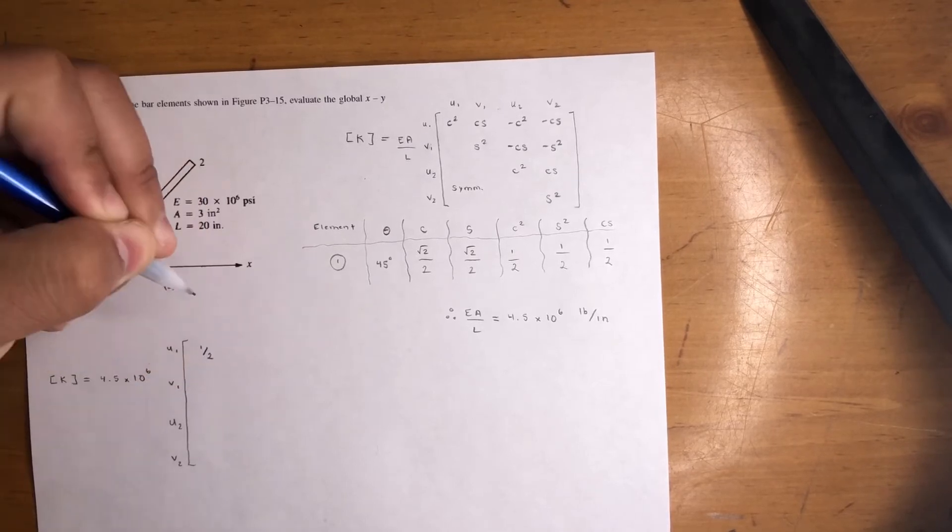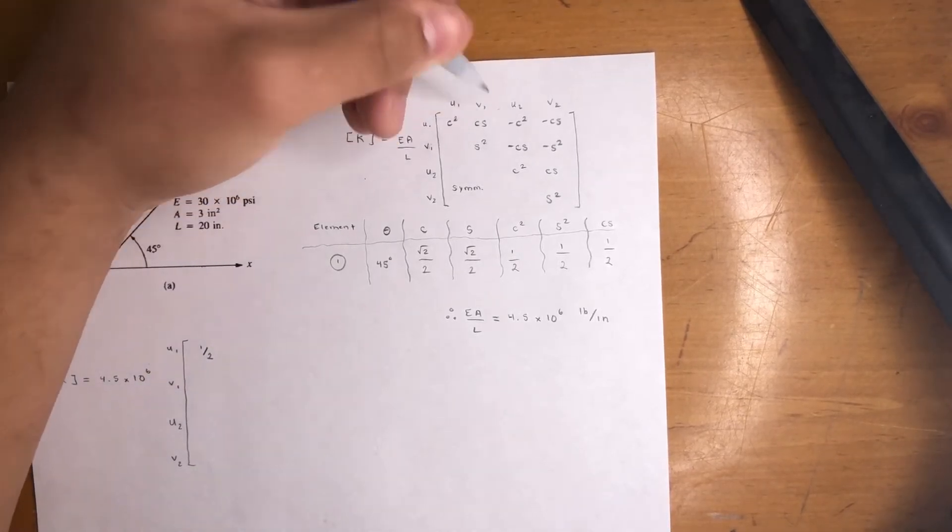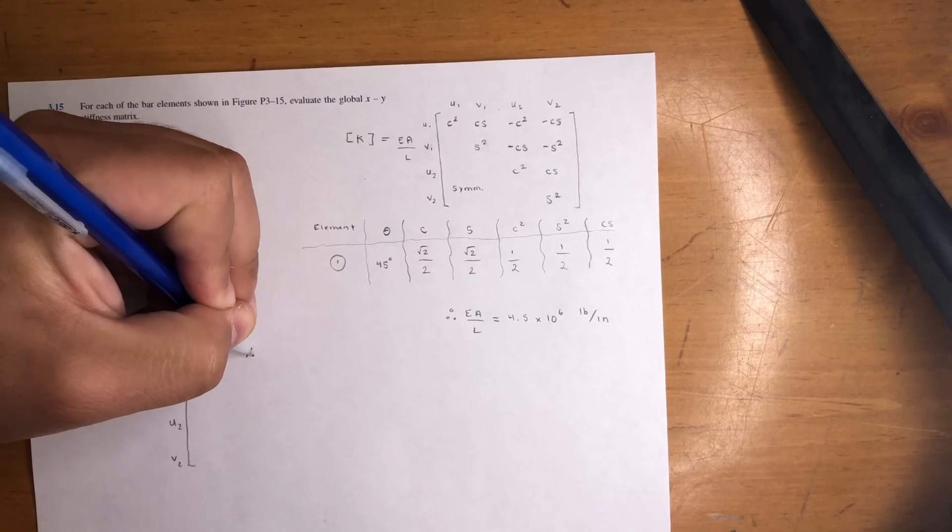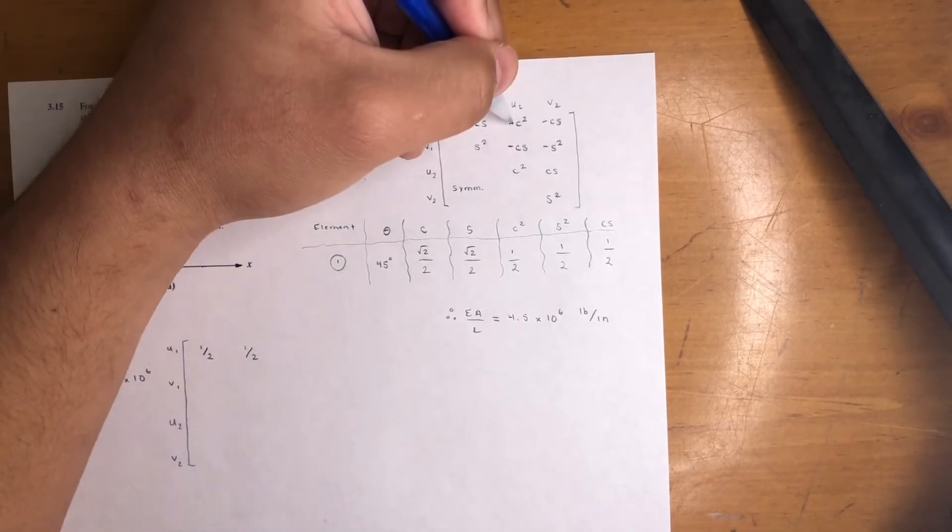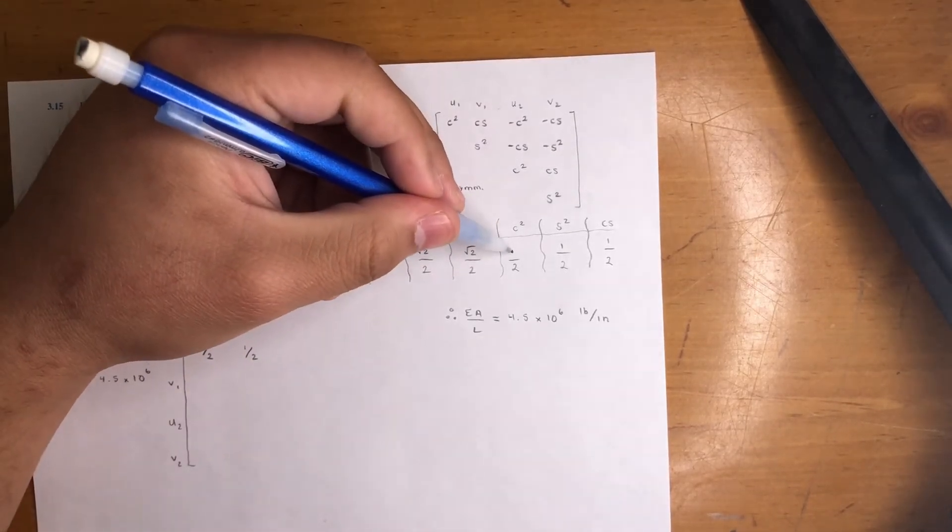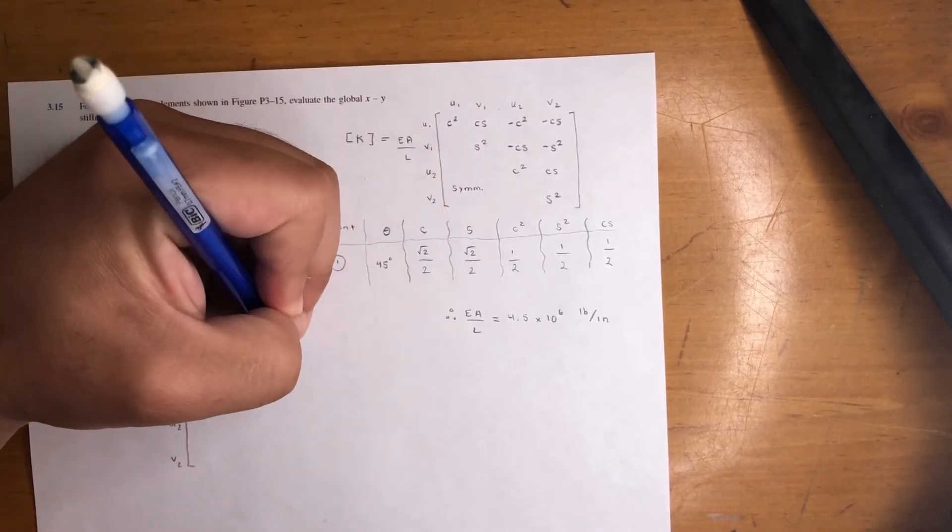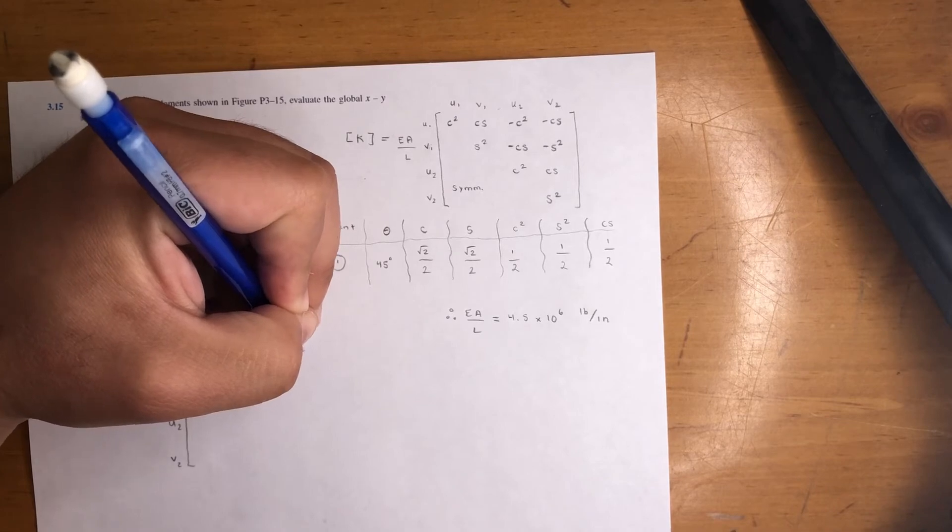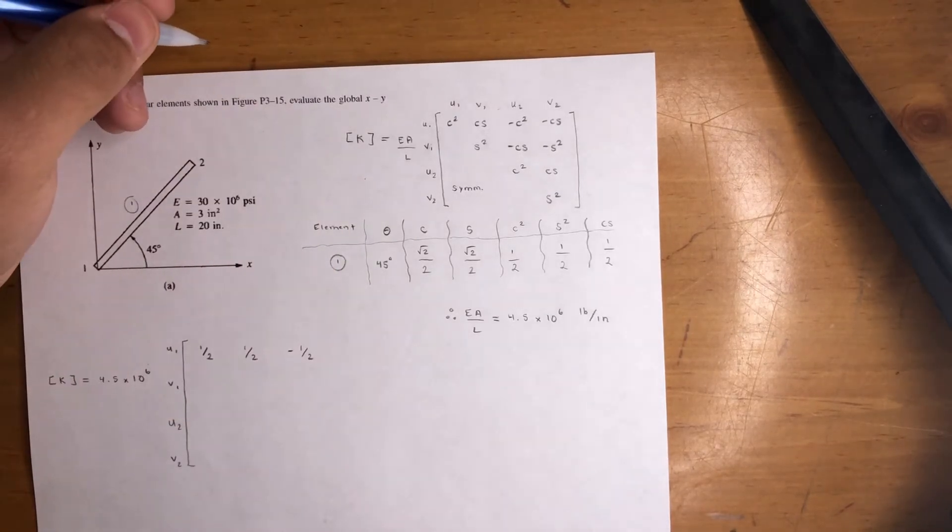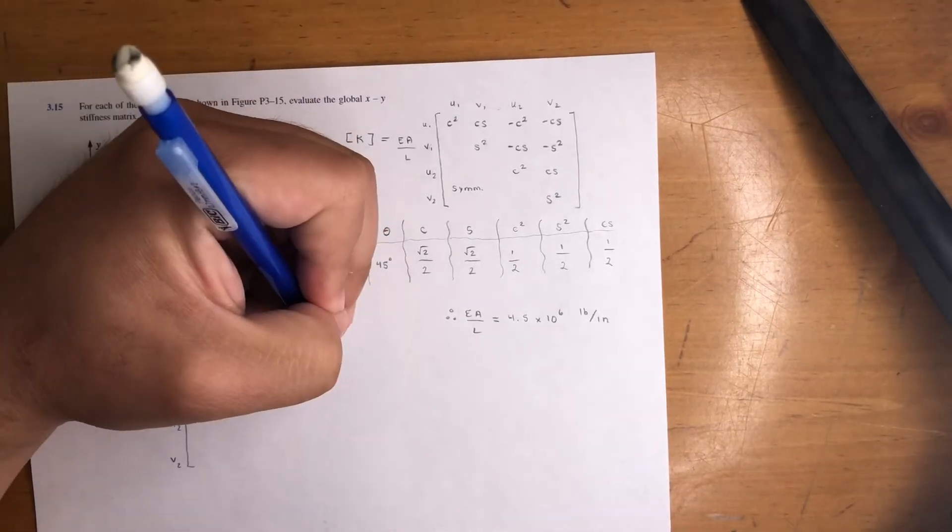It's one half for the first one. Next one is Cs, so another one half. Next is negative C squared, so it's negative one half. Be careful—you don't square the C squared. If there's a negative in the formula, you'll have a negative here. Just make sure you note that. Then negative one half for negative Cs.